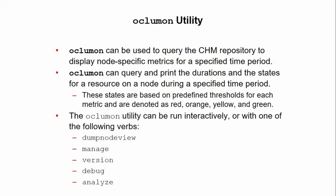You can also use OCLUMON to query and print the duration and the states for a resource on a node during a specific time period. The states are based on predefined thresholds for each resource metric and are denoted as red, orange, yellow, and green, indicating a decreasing order of criticality.